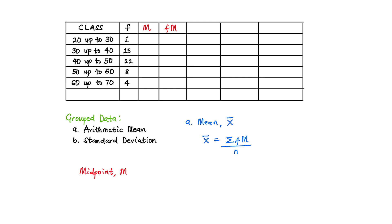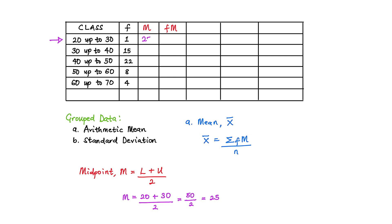The midpoint m is calculated as the lower limit plus the upper limit, divided by 2. Applying this for the first row, the class is 20 up to 30. So the midpoint equals the lower limit, 20, plus the upper limit, 30, divided by 2. 20 plus 30 gives us 50, divided by 2 gives us 25. So the midpoint for the first row is 25.